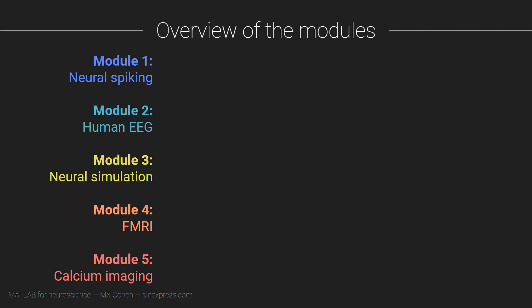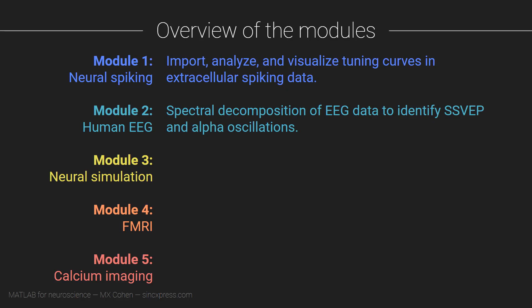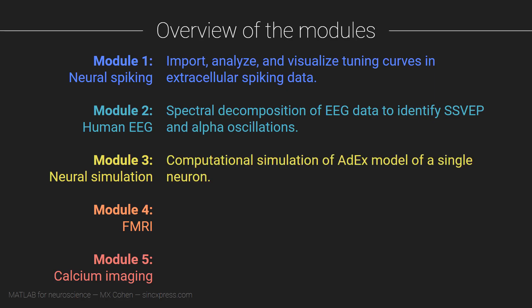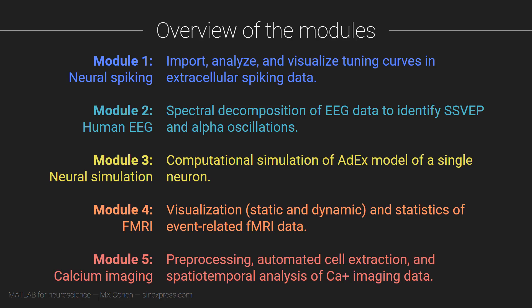This course is organized into five modules that span many different topics in modern neuroscience. In module one, we will work with extracellular spiking data. In module two, we'll do some spectral analysis of human EEG data. Module three is a computational simulation of a neuron. Module four focuses on visualization and statistics of fMRI data. And finally, module five is about image analysis and principal components analysis of calcium imaging data.